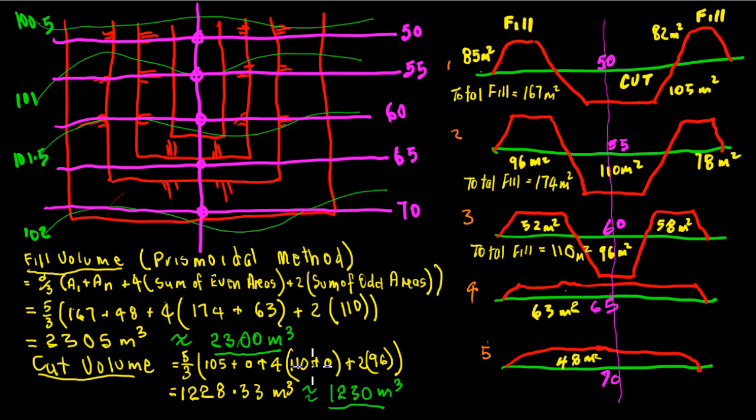And then plus 2 times the cut in the odd position, which is 96. Multiplying that out we get 1228.33 cubic meters, which is approximately 1230 cubic meters.